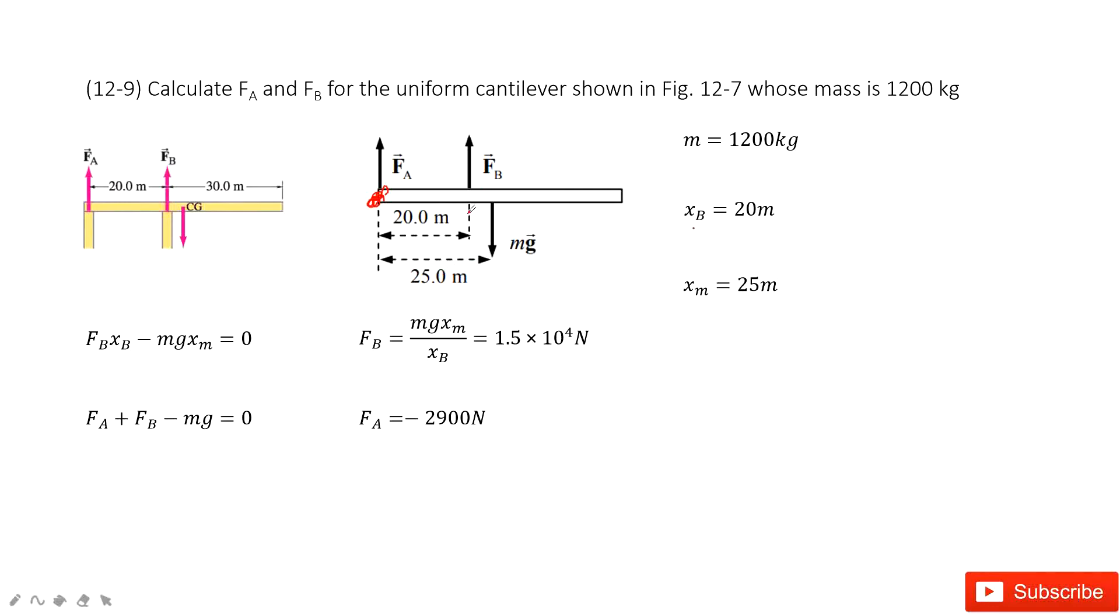How can you do that? You can use the right-hand rule to decide the direction for each torque. You can see FB, this one, right-hand rule is pointing out. MG times XM point in. So they are opposite directions.